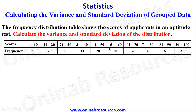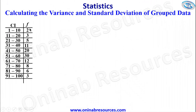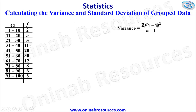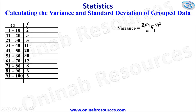We have the scores in groups and the respective frequencies. We have rearranged the table in a vertical form so that we go with the formula for variance, which is sigma f into x minus x-bar squared over n minus 1. We take the next column to be x, and this x represents the mid value of each of the class intervals, which we are going to be using to calculate the x-bar. That x-bar is the mean of the grouped data, where n is the sum of the frequencies. So we go ahead to create the column for x.